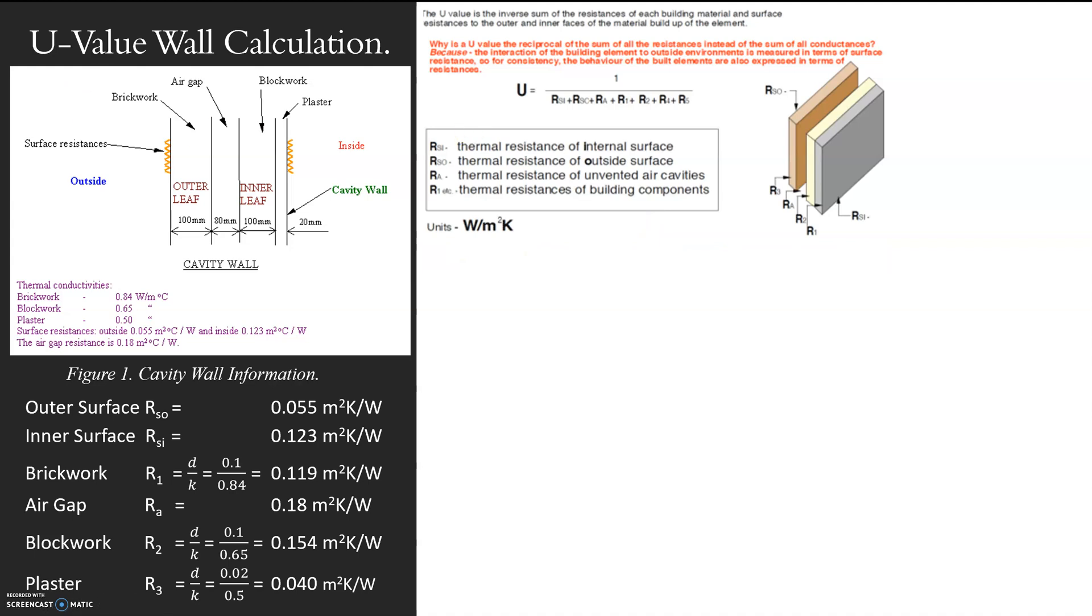So down at the bottom here, I have the resistance of outside, inside and air gap. I've been given the surface resistances and the air gap resistances for my materials. However, I've not been given the resistances for the bricks, the blocks or the plaster because they are a given depth. So I need to work them out. So there's my resistances, no problem.